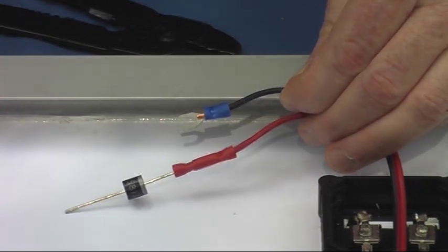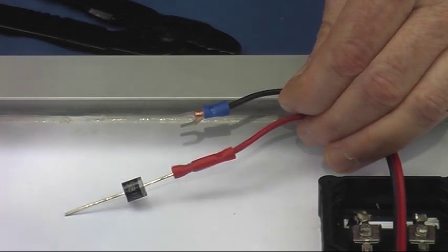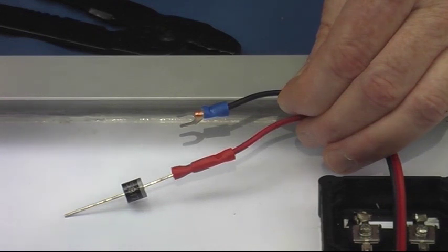Now we've crimped the diode onto the positive wire with the blocking end facing the battery, that's the silver end. And the blue terminal is on the black wire which goes to the negative lead.